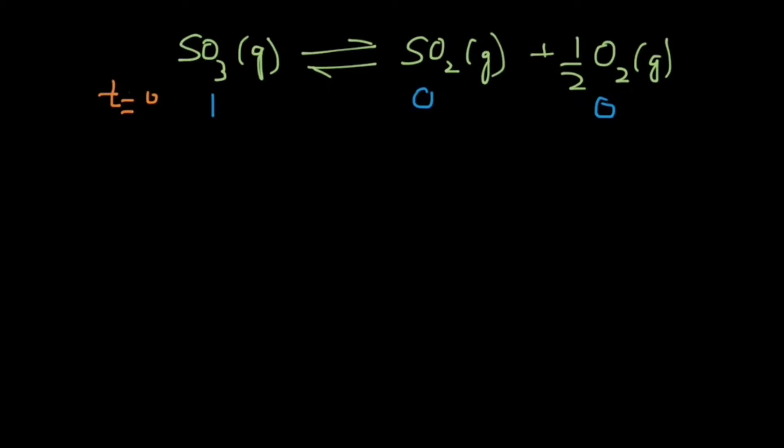This is the initial time, and at equilibrium 50% of SO3 is dissociated. Now if you remove 50% of 1, you will get half mole SO3, and from the equation you can see that 1 mole of SO3 will give 1 mole of SO2 and half mole of oxygen.